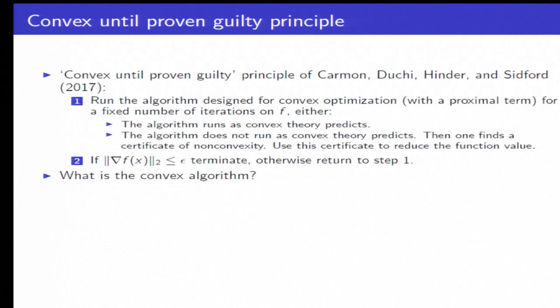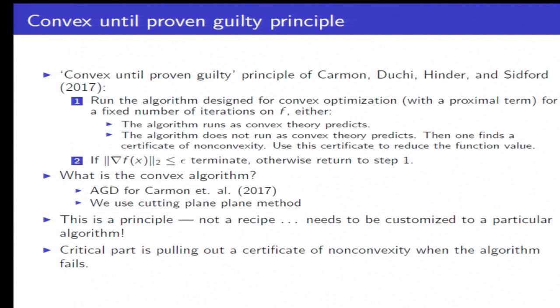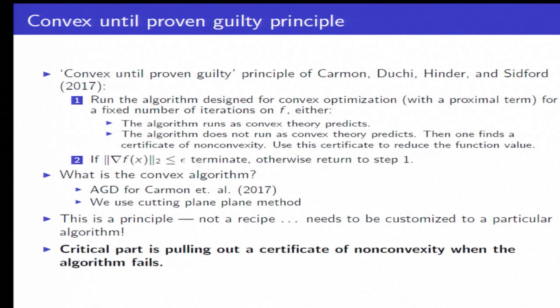So one question you might ask is what is the convex algorithm? Like I say, the original work was with accelerated gradient descent. Here, we use a cutting plane method. And I want to emphasize as a principle, not a recipe. But nonetheless, the really critical part is pulling out a certificate of non-convexity when the algorithm fails. So I want to give you a little bit of intuition on how to do this.